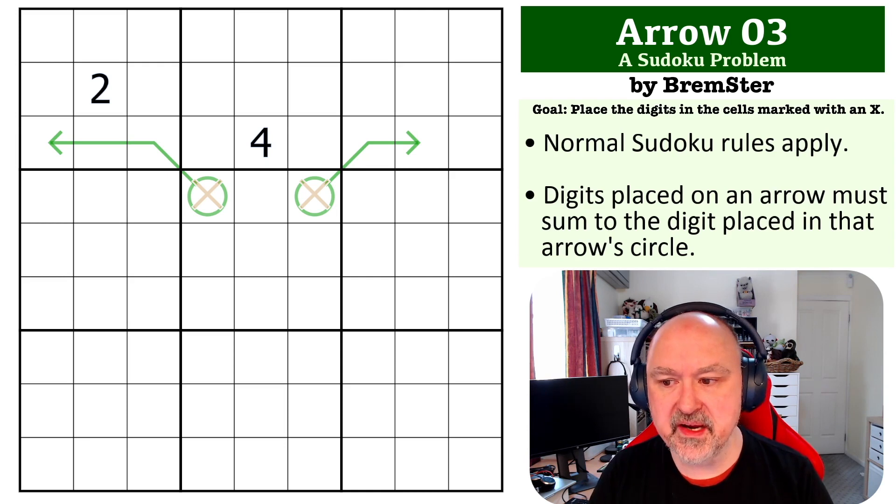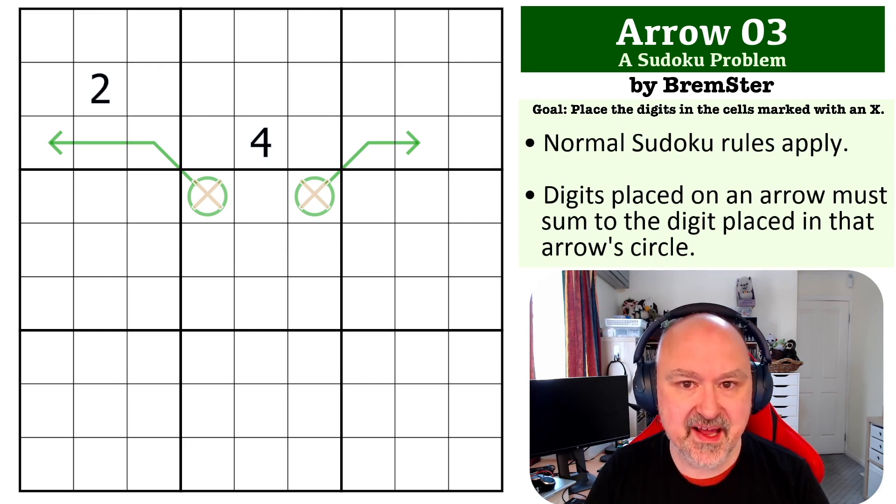So this is Arrow Problem three, and the rules on this one: the digits that are placed on the shaft of the arrow, the sum of those is what goes in the arrow circle. That's all you've got for this one. You need to place the digits where there are X's. There's a link to the problem below. Feel free to pause the video and I'll be back in a few seconds to explain how this one works.